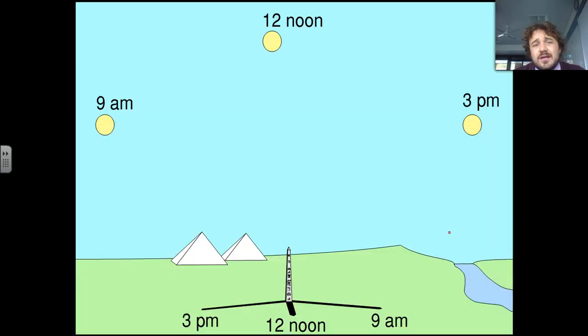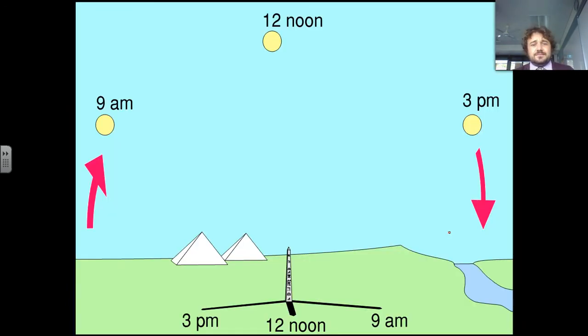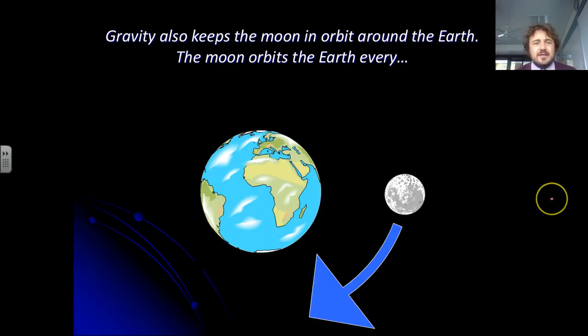So because of the spin, the sun rises and sets in the east and west. I always get that confused. But basically this is what you see. During the day the sun comes up in the morning, it goes across the horizon during the day. And it's also gravity that keeps the moon in orbit around the Earth every 28 days.